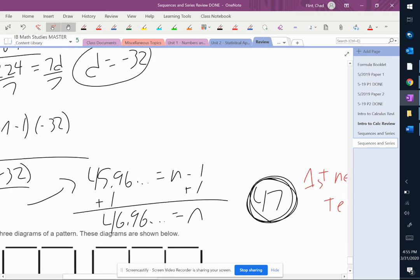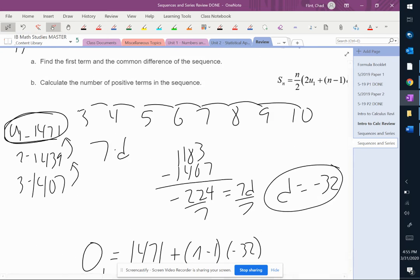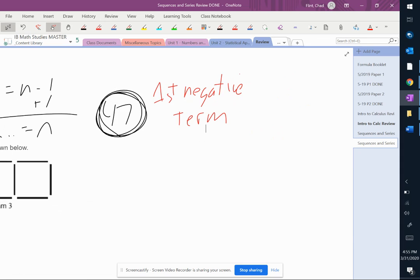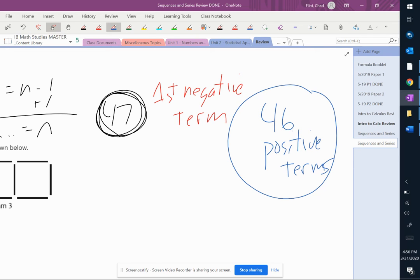And I'm going to reread the question because I have a feeling I said how many positive terms are there. Calculate the number of positive terms. So there are 46 positive terms in that sequence because the 47th one is going to be negative.